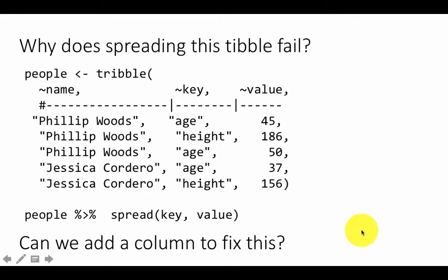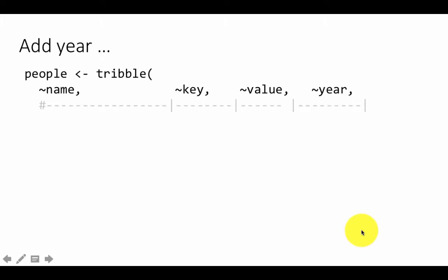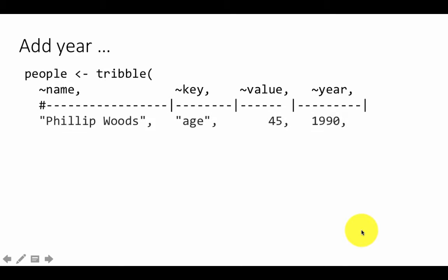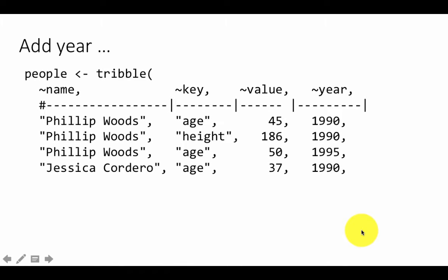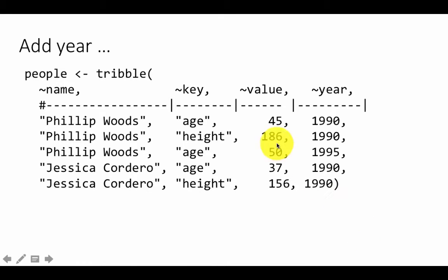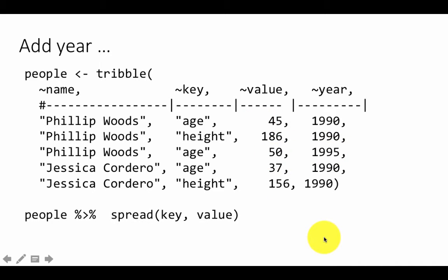One thing we can do to make the values unique is to add a year column. We could change the tribble to include a year column — obviously Philip Woods can have different ages in different years. In 1990 he was 45, in 1995 he was 50. Adding that year column makes the combination unique, so spread will work perfectly. That's the explanation for this scenario.